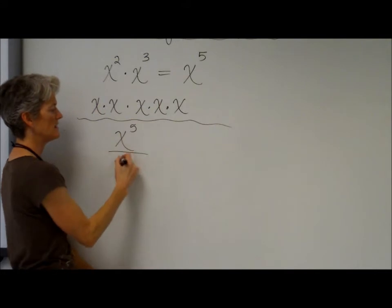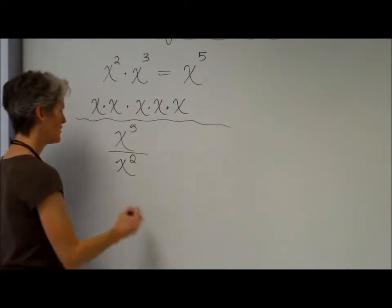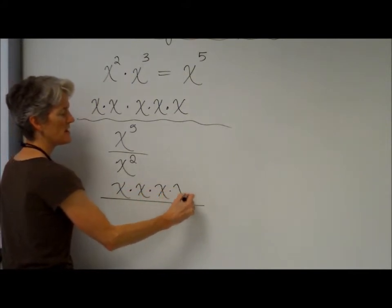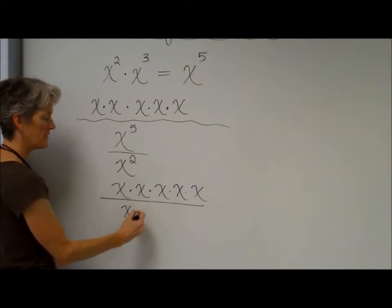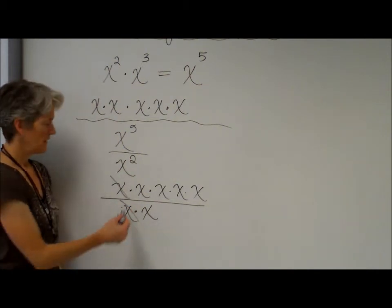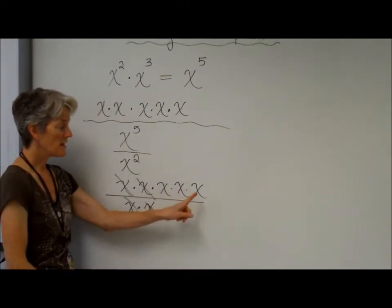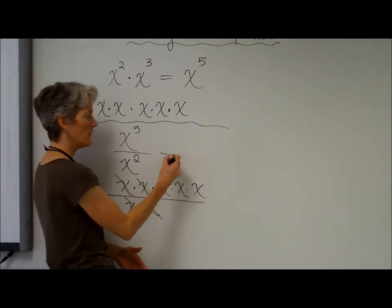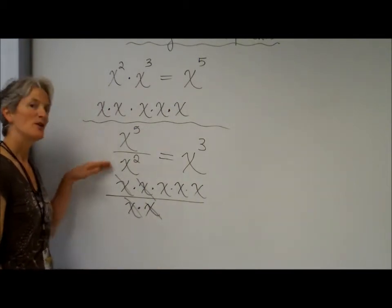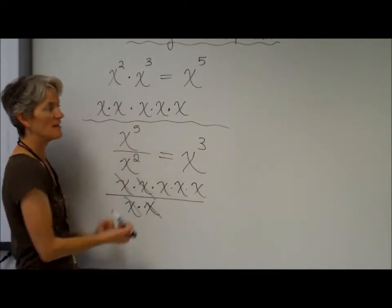Let's try division. x to the fifth divided by x squared. x to the fifth is shorthand for x times x times x times x times x. x divided by x is one, and here's another x divided by x — you can divide those out. I'm left with x times x times x, which is x to the third. When you divide bases that are the same, you subtract the exponents.